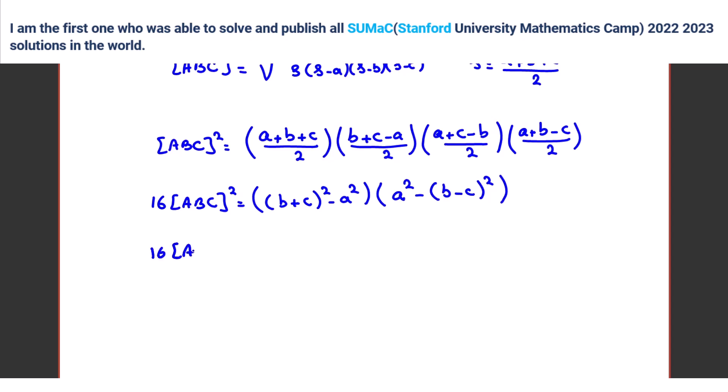A squared minus B minus C squared. Exactly. So 16 times area of A, B, C squared is what? If you expand, it's B squared plus, B squared plus 2BC plus C squared minus A squared. What about next one? A squared minus B squared minus C squared plus 2BC.